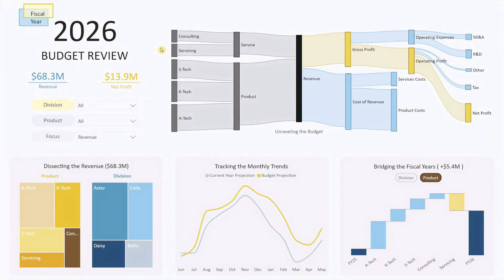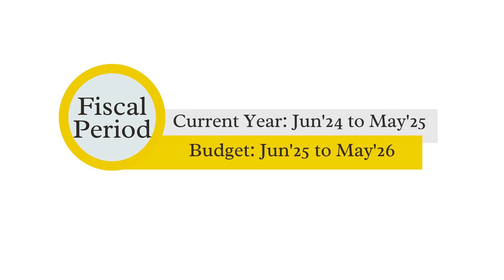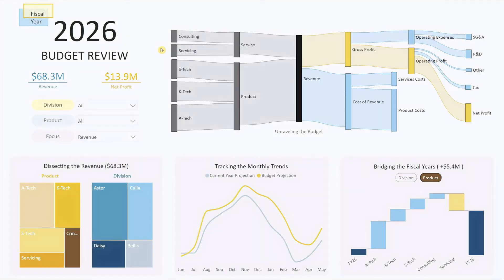This dashboard is designed to assist users in reviewing their budget for the upcoming fiscal year. I've included sample data for two fiscal periods: June 2024 to May 2025 as the current year's projection, and June 2025 to May 2026 for the new budget. As you open the dashboard, the title 'Fiscal Year 2026 Budget Review' immediately centers your focus on the specific year under analysis, ensuring you stay oriented throughout your review. Below the title, we have two prominent numbers — budget revenue and budget net profit — giving you an immediate snapshot of your financial outlook and helping you gauge whether you're on track with your financial goals right from the start.